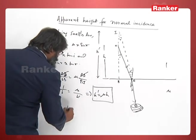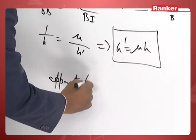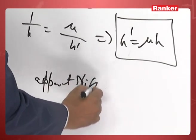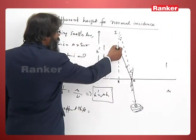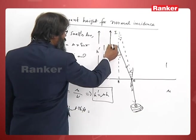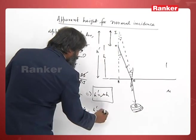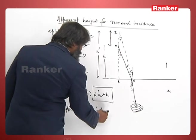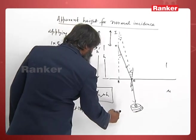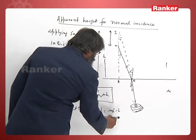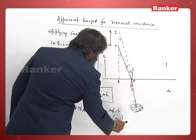Again, the apparent shift here we can calculate—this distance, that is h′ minus h. Apparent shift here will be equal to how much distance it is shifted, given by h′ minus h. h′ is μh minus h, that is h(μ - 1), where μ is the refractive index of this.